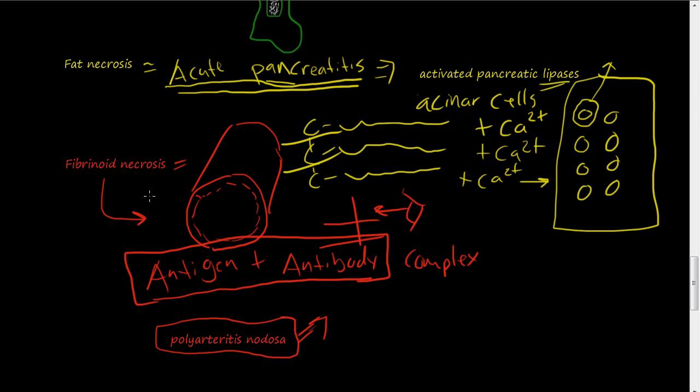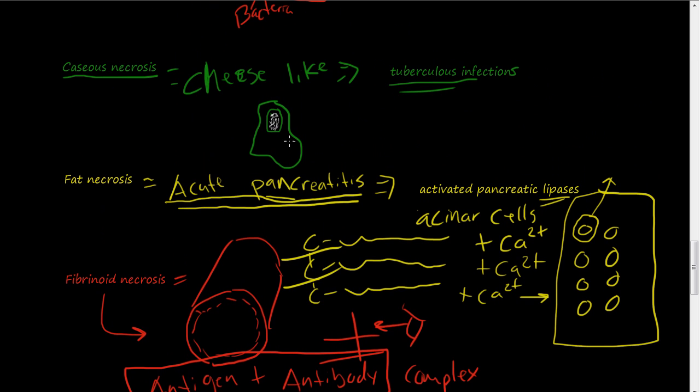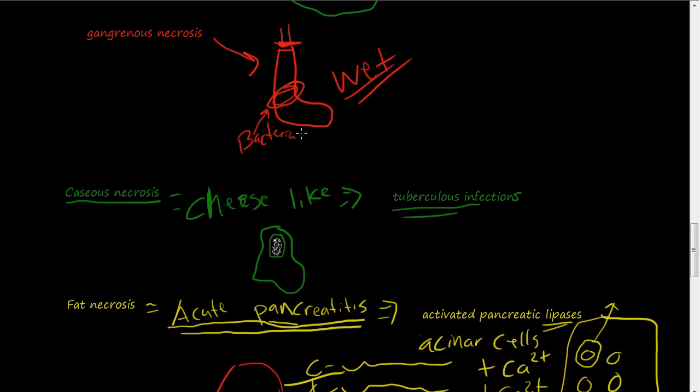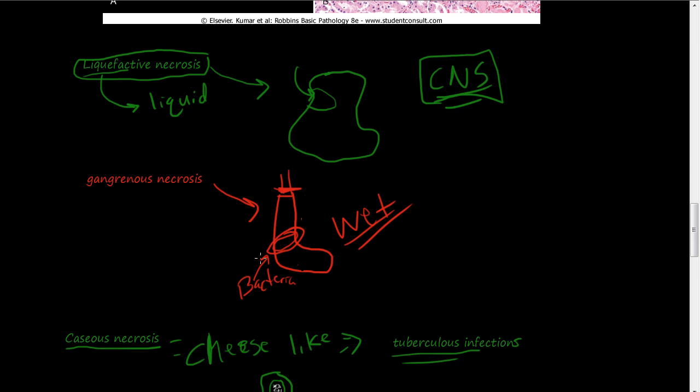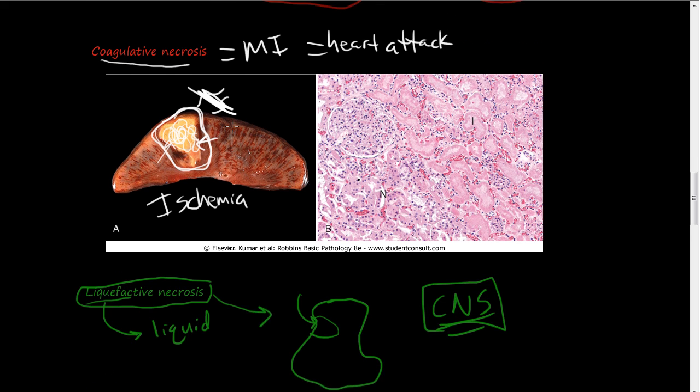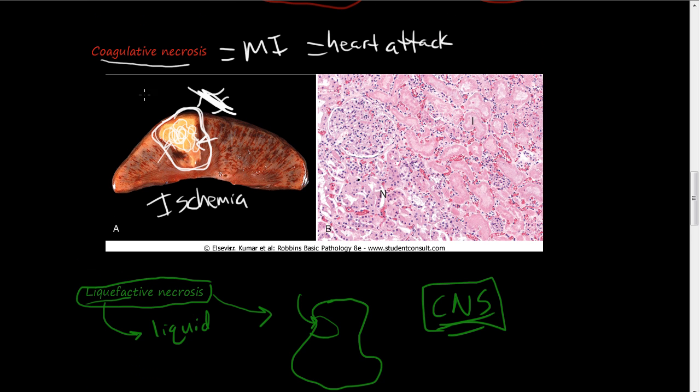So that is fibrinoid necrosis. So just to review, we have fibrinoid necrosis, fat necrosis, caseus necrosis, gangrenous necrosis. When bacteria enters in, it's called wet gangrene, liquefactive necrosis, and coagulative necrosis. And that's it for necrosis. See you in the next video.